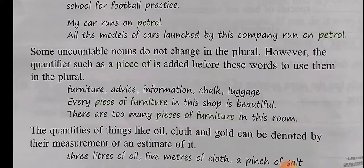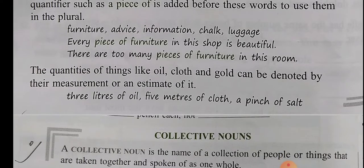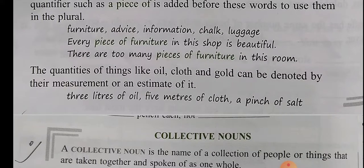Some uncountable nouns do not change in plural form. However, the quantifier 'a piece of' is added before such words to use them in plural — furniture, advice, information, job, luggage. For example, every piece of furniture in this shop is beautiful. There are too many pieces of furniture in this room. The quantities of things like oil, cloth and gold can be denoted by their measurement: 3 litres of oil, 5 metres of cloth, a pinch of salt, etc.